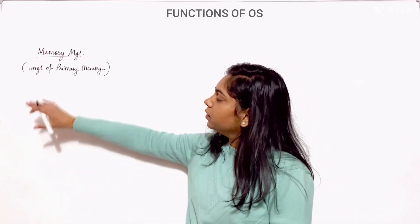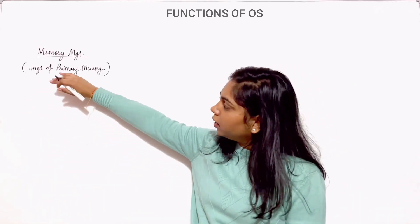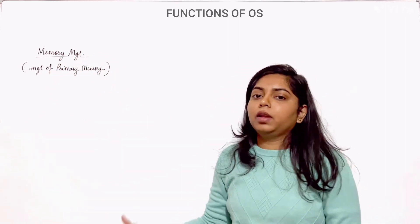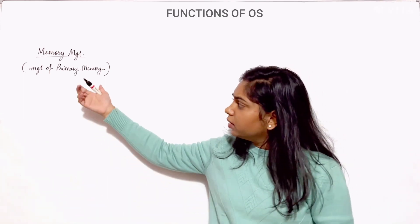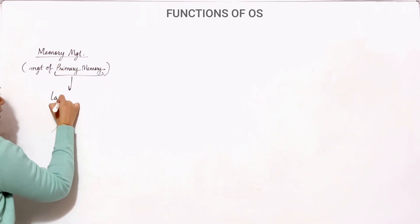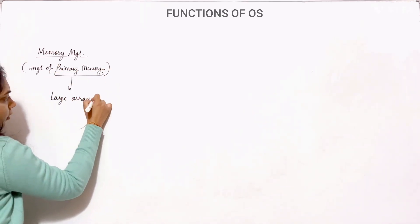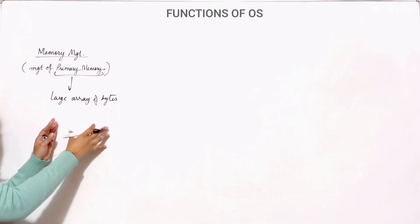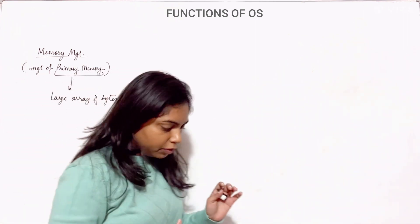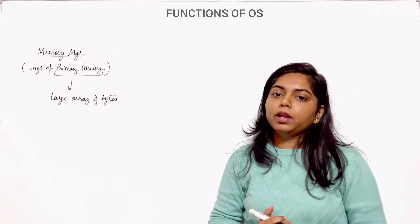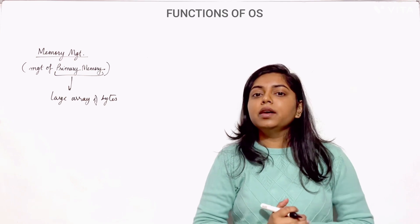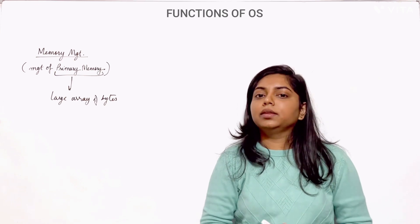Let's start with the first function, which is memory management. As the term says, it is management of memory — but which memory? Primary memory, also referred to as main memory. Primary memory is a large array of bytes wherein each byte has its own address. For a program to be executed, it must reside in primary memory, because main memory is directly accessible by the CPU.